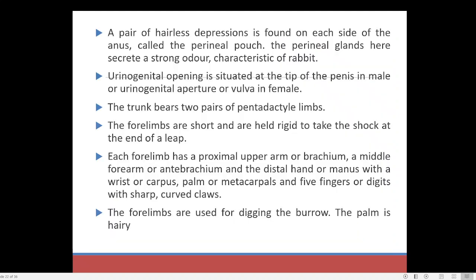A pair of hairless depressions are found on each side of the anus, called perineal pouches. The perineal glands secrete a highly species-specific odour or smell called pheromones. This area around the anus contains many glands and the pheromones they produce allow other members of the species to detect the presence of each member — that is the purpose of the perineal gland.